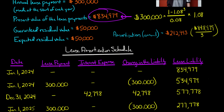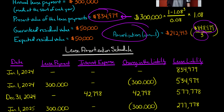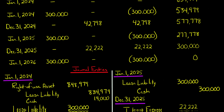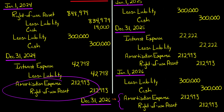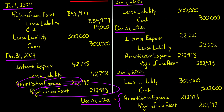Our annual amortization: we've got a three-year lease term and an initial right of use asset of $848,979. We take the initial right of use asset divided by the lease term, which gives us $282,993 of amortization expense per year. Now, if the lease had a transfer of ownership clause or a bargain purchase option, the lessee would amortize over the economic life of the asset rather than the lease term — but we don't have that here. So we amortize straight-line over the three-year lease term. At December 31st, 2024, at the end of year one, we debit amortization expense and credit the right of use asset for $282,993.